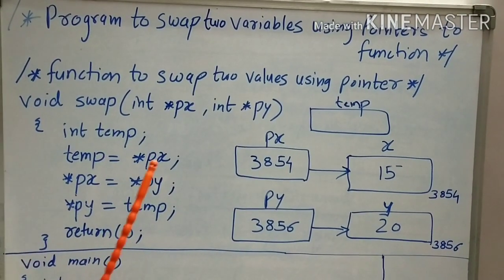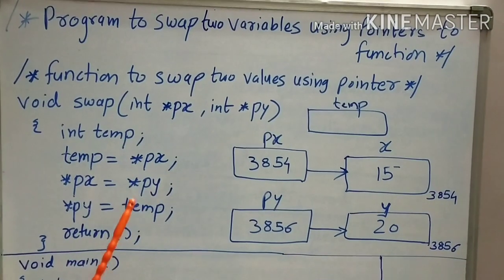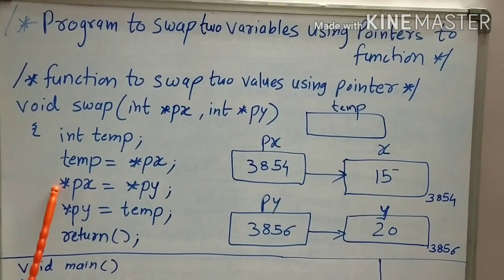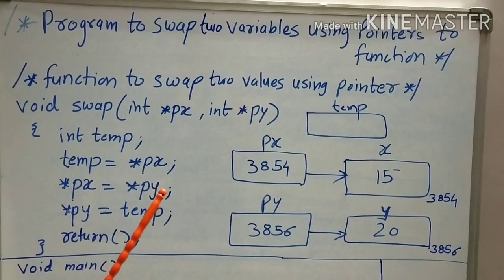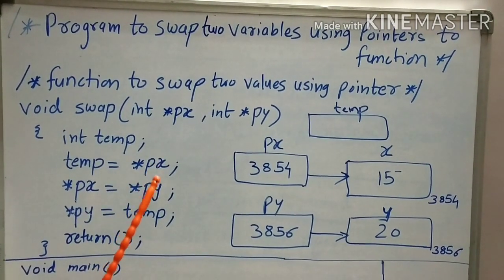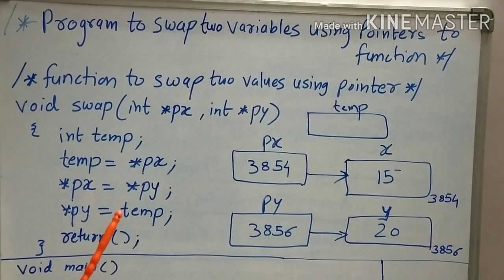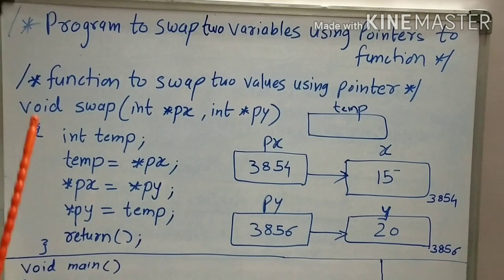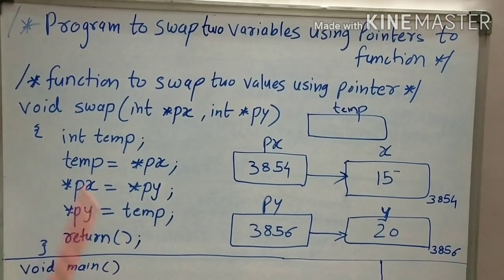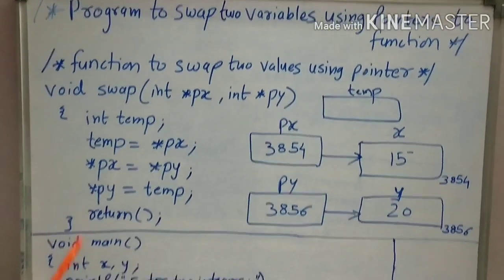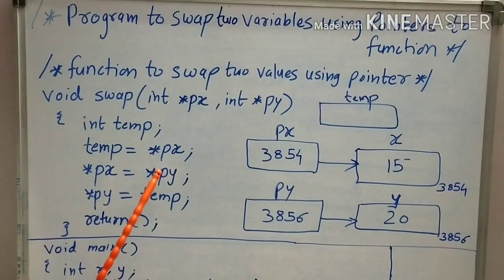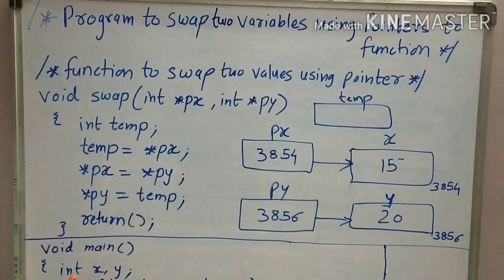In terms of PX and PY, I am writing these steps to swap the values of variables which are pointed by PX and PY. As this is a void function, it will not return anything. This is the function definition to swap two variables using pointers.